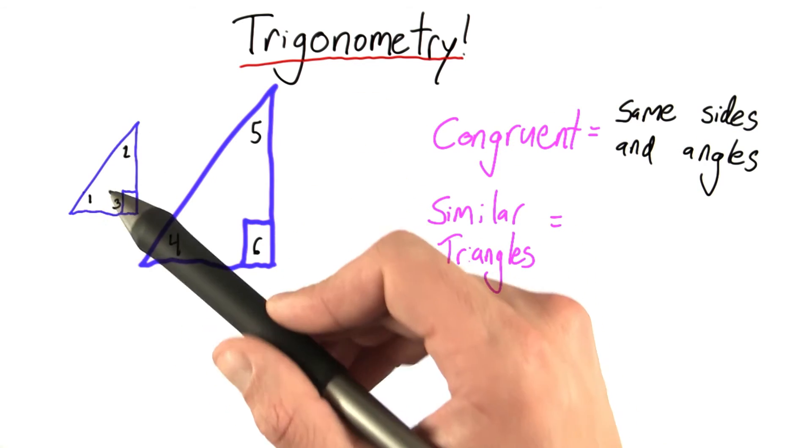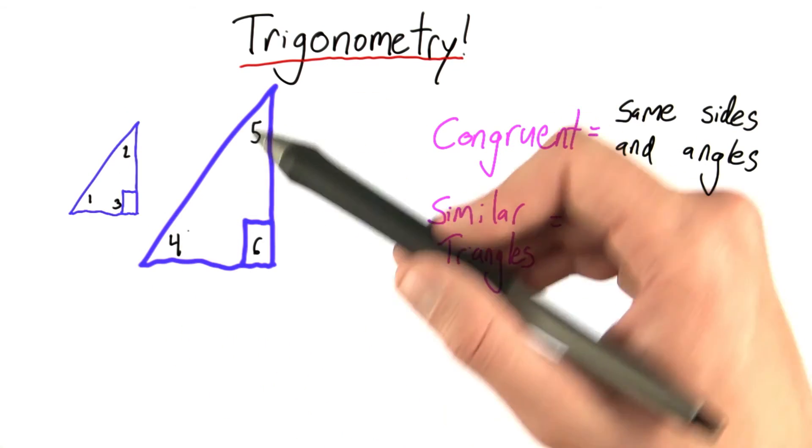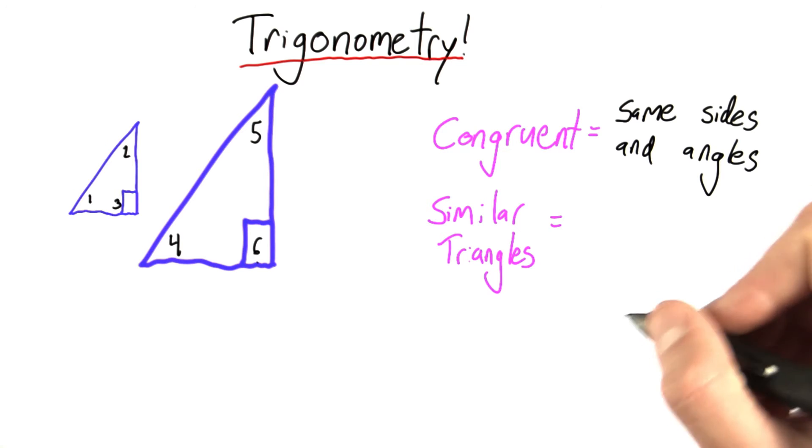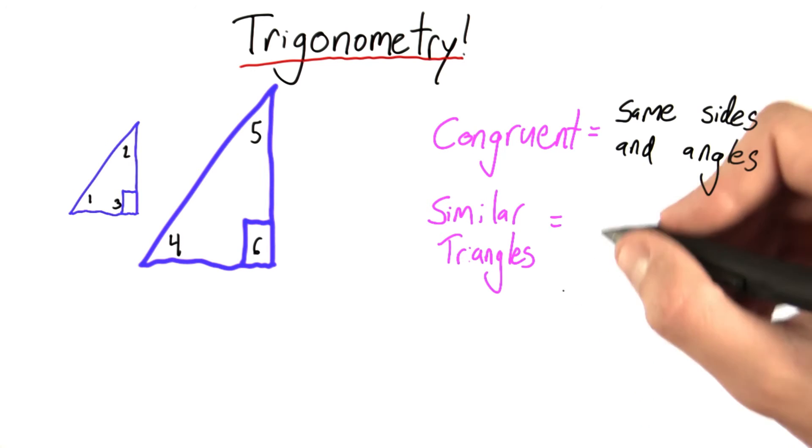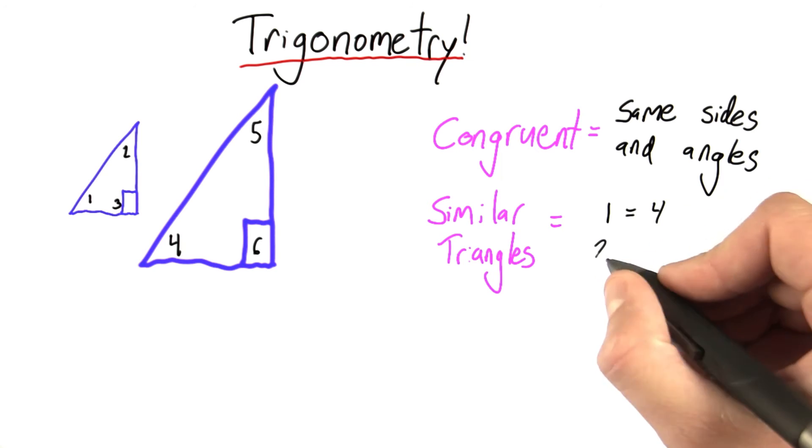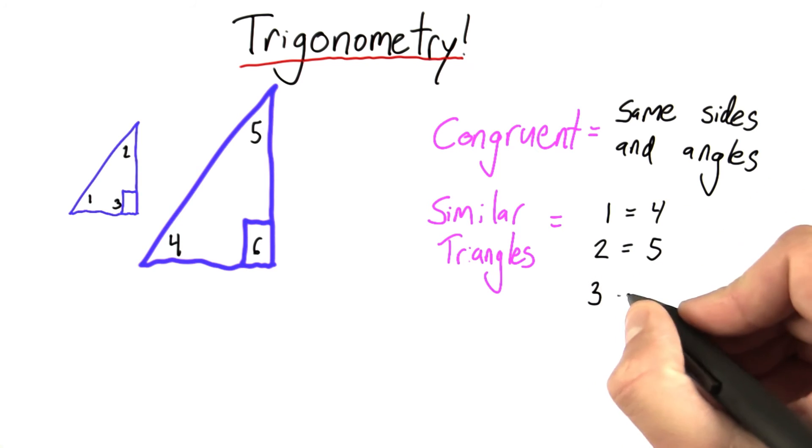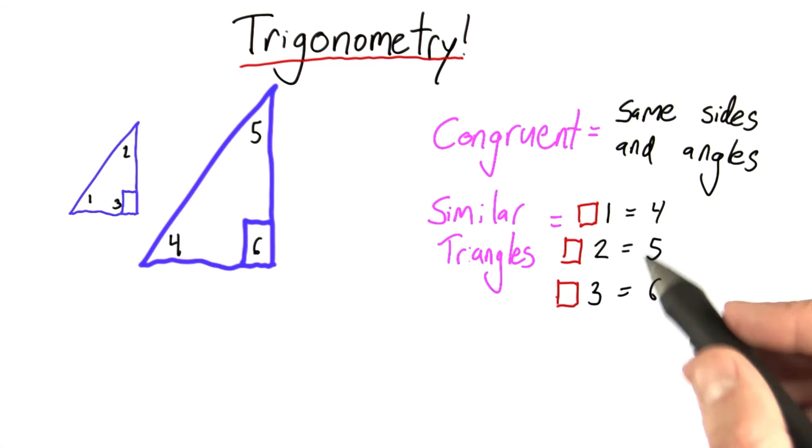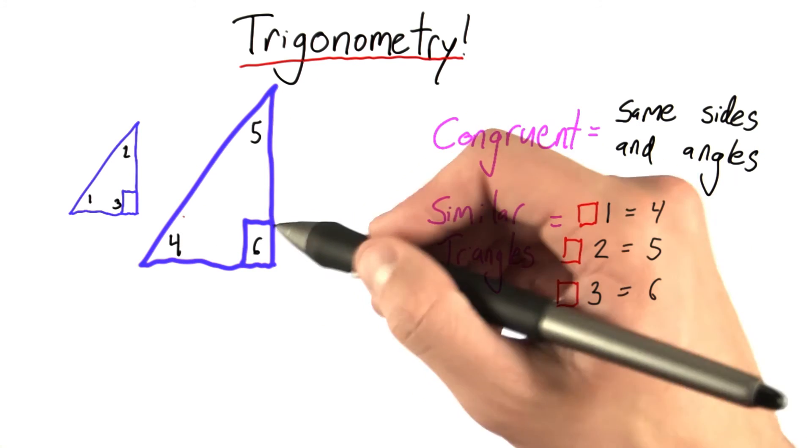Now, each of these triangles has three angles. This one I've labeled 1, 2, and 3. This one 4, 5, and 6. Do they have anything in common? Are they equal? Is this statement true? Angle 1 equals 4. Angle 2 equals 5. Angle 3 equals angle 6. Check whichever of these statements are true about these two triangles.